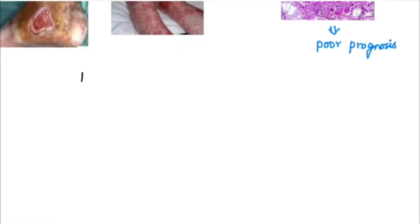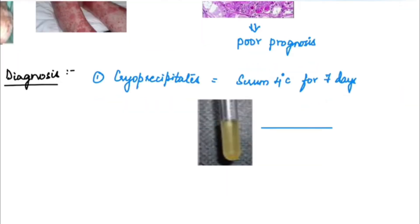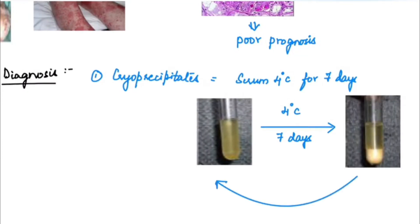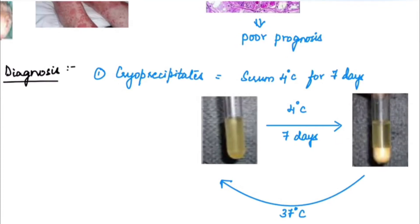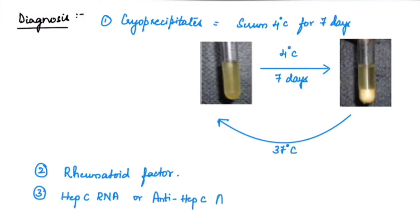Now we will look at the diagnosis. The first step is to demonstrate cryoprecipitates — when serum is incubated at 4°C for 7 days, precipitates will be seen. This is normal serum incubated at 4°C for 7 days; the immunoglobulins precipitate, and when heated back to 37°C they dissolve. The second is to demonstrate rheumatoid factor, which is commonly seen in cryoglobulinemic vasculitis. The third is to detect hepatitis C RNA or anti-hepatitis C antibodies.